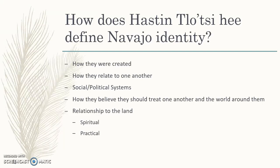The Navajo creation story defines Navajo identity in various ways. First, it helps us understand how they were created — their own perspective on their origins. It also helps us understand how Navajo people relate to one another and to others. It will eventually help us understand their social and political systems, laying out a map of what those look like — even continuing today. The story also tells us how Navajo people believe they should treat one another and the world around them, and it helps us understand their relationship to the land, both spiritually and practically, as we see when they receive the seeds.